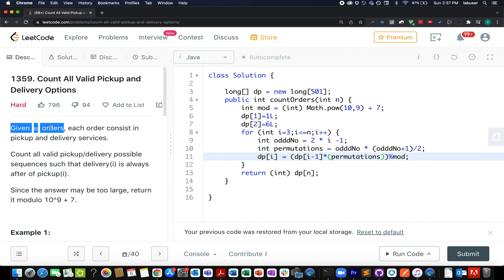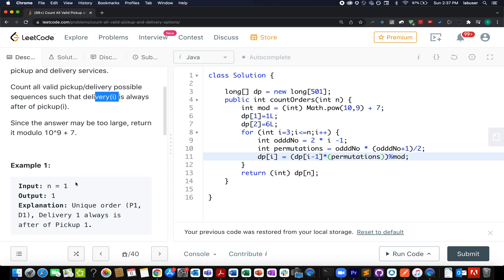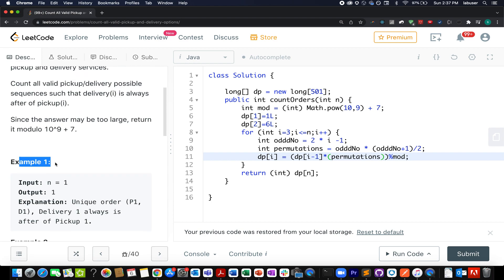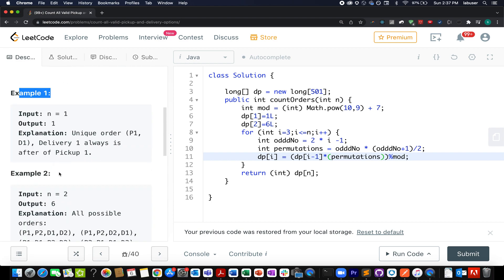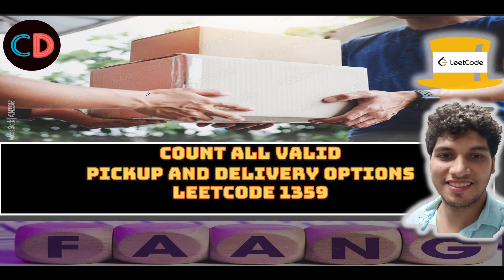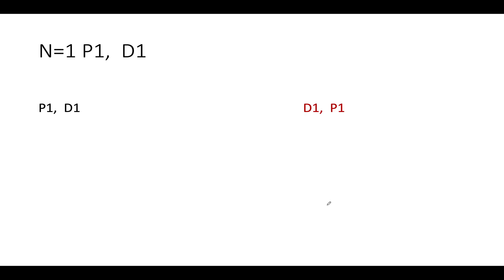What we need to identify? We need to identify the count of all pickup delivery possible sequences such that delivery always happens after the pickup or pickup happens before the delivery. Either way out. Here we have provided a few examples. I will be walking you through these examples as well as the algorithm via the presentation. So let's quickly hop on to it. Count all valid pickup and delivery options, LeetCode 1359. It's a hard level question on LeetCode. However, for those who have been following along for the past one and a half years will agree with me that we can rate this question under medium category. So let's get started.